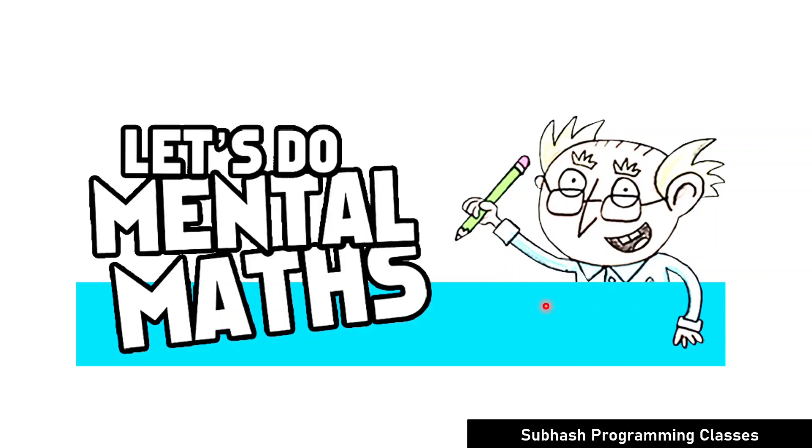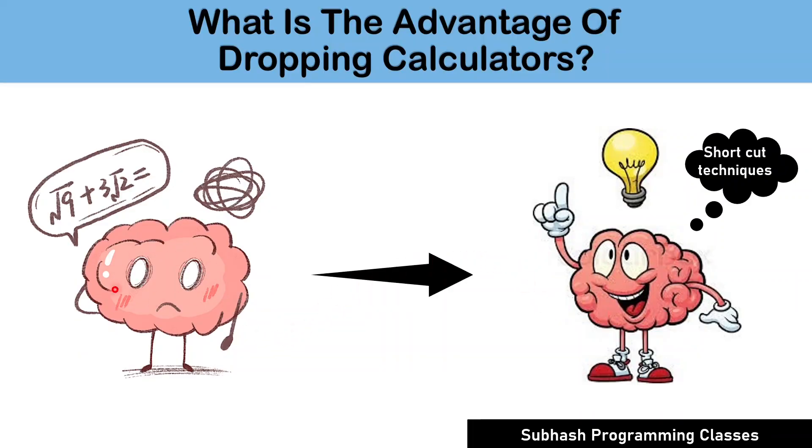By the way, do you know what is the greatest advantage of dropping calculators for solving mathematical problems? If not, then listen to me very carefully. The advantage of dropping calculators for calculation is that your intelligent mind understands that the mental work is taking too much time and is leading to inaccurate answers. Therefore, it starts picking up shortcuts or smarter approaches that will help you to speed up the calculation and improve the accuracy.